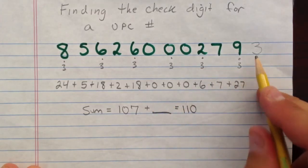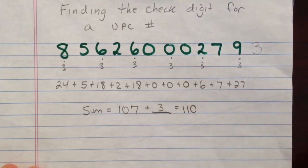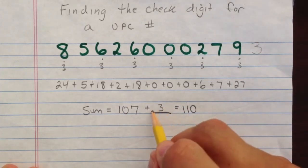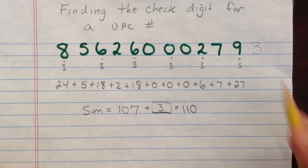In this case, you can see that the 3 is correct because we added 3 to that, and that would equal 110. So the check digit is a correct amount of 3. That's what it actually is on the can of unicorn meat itself.